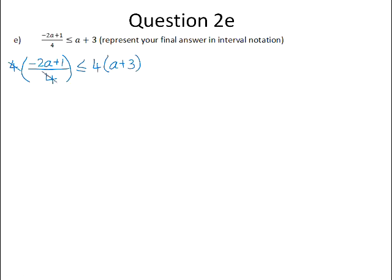So 4 divided by 4 is 1. That leaves us with negative 2a plus 1 is less than or equal to. Here we can multiply the 4 into the bracket, gives us 4a plus 12.